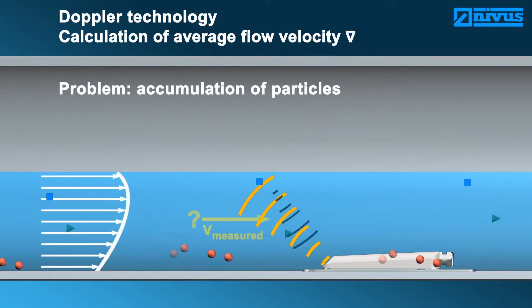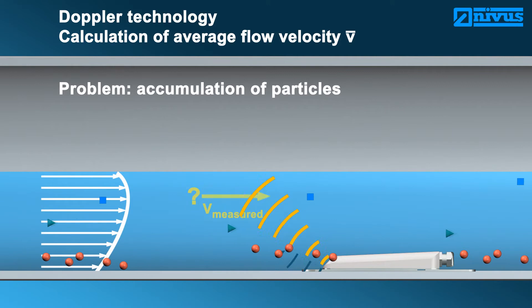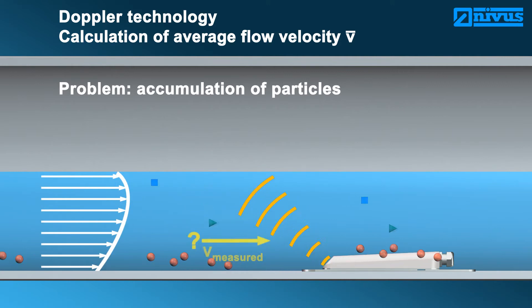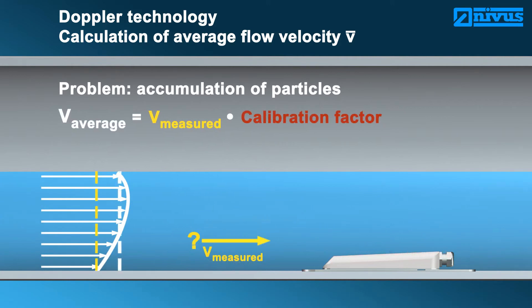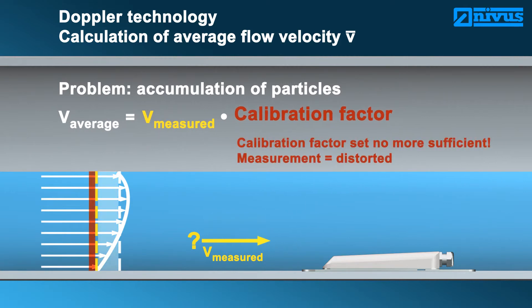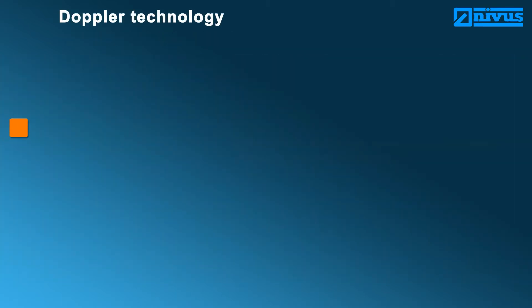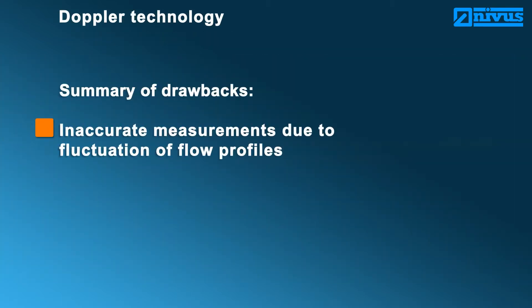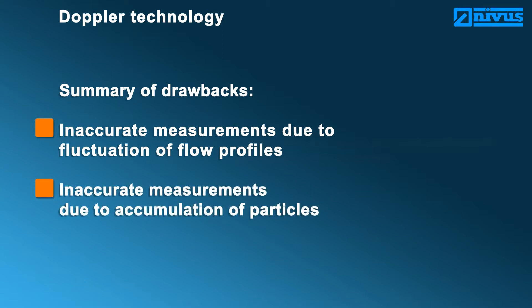Accumulation of particles generates a stronger measurement signal and hence is determined by the sensor as the measurement spot. A local variation therefore creates a distorted reading which varies from the calibration. The shortcomings of Doppler measurement systems in brief: faulty results at varying flow profiles, faulty results in case of changing particle concentration, and no permanent calibration possible.